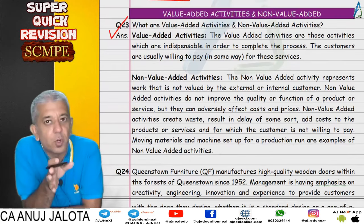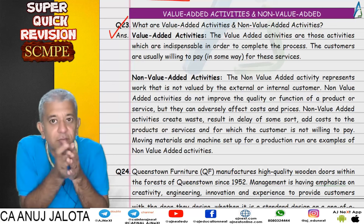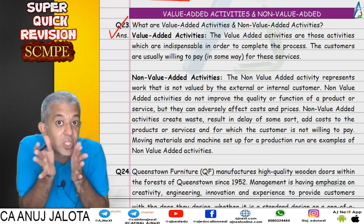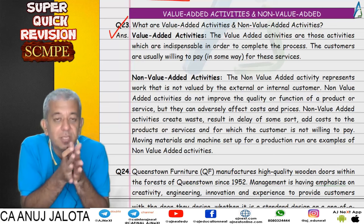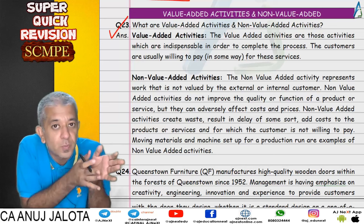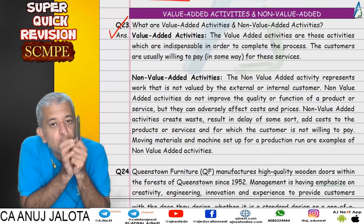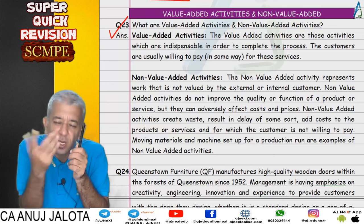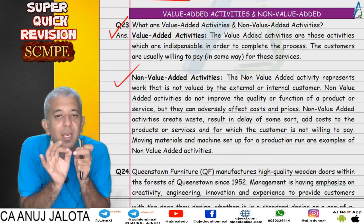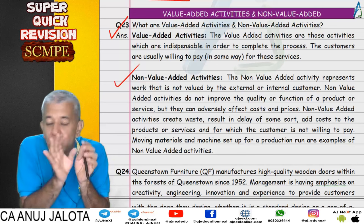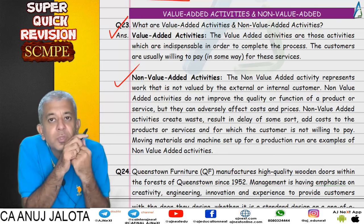Question number 23. One of the big reasons we follow activity based costing is to get the cost of each and every activity. Once we have that, we think about which activities should be done and which should not — spending more time on value-added activities. Value-added activities are those which add value to the product and which the customer values — the customer pays for those. For example, manufacturing a pen is a value-added activity. Non-value-added activities do not mean they are useless or can simply be avoided.